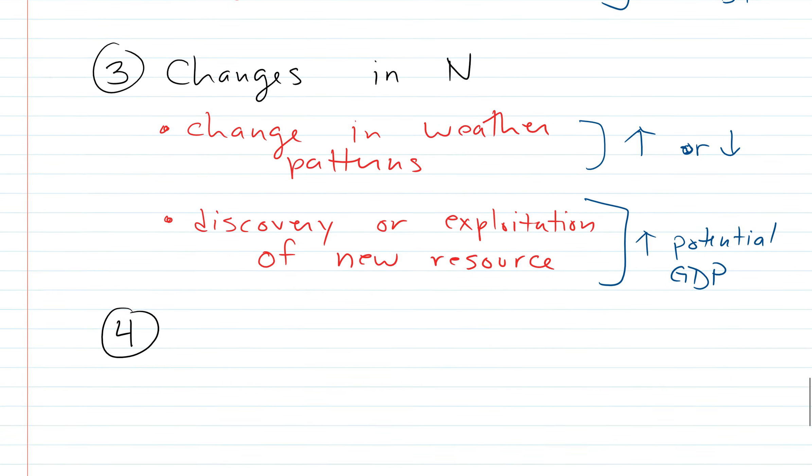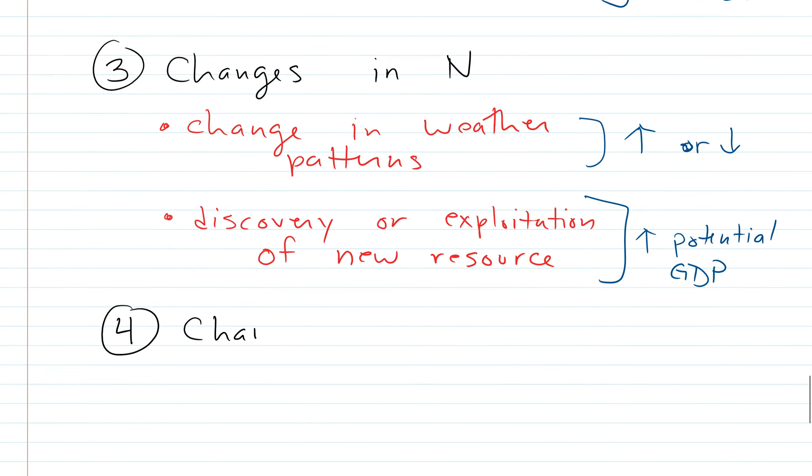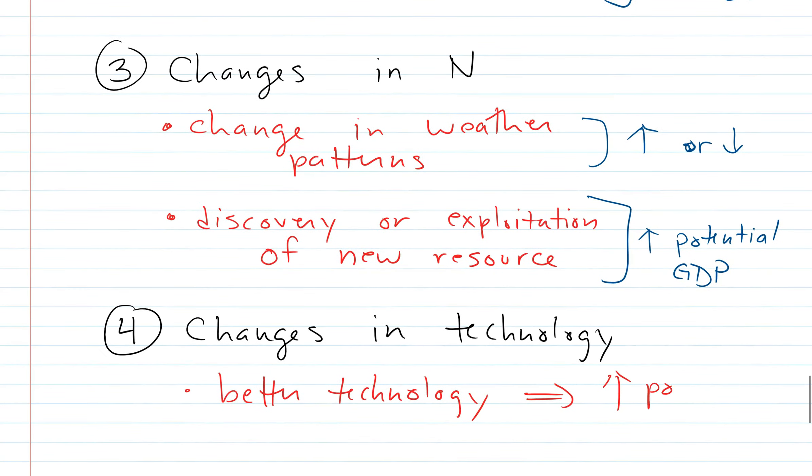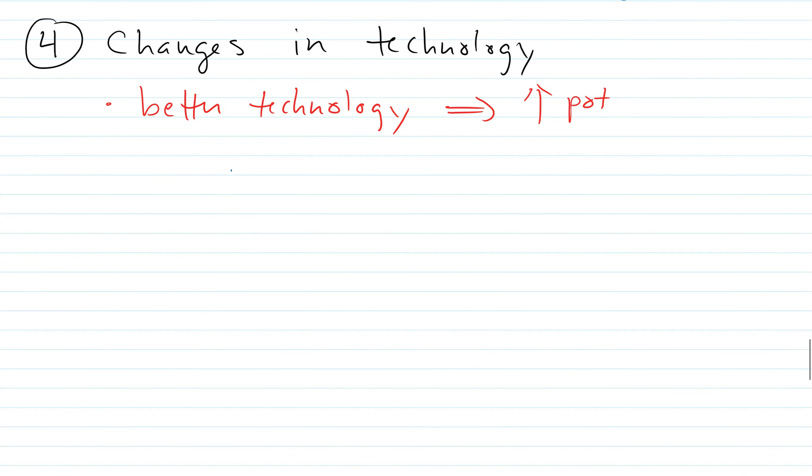The final one is changes in tech, technology. So if tech goes up, we get better overall technology, which is happening all the time. Technology is improving all the time and very rapidly. So this gets to higher potential GDP. Better technology leads to higher potential GDP. So finally, we can just summarize this.